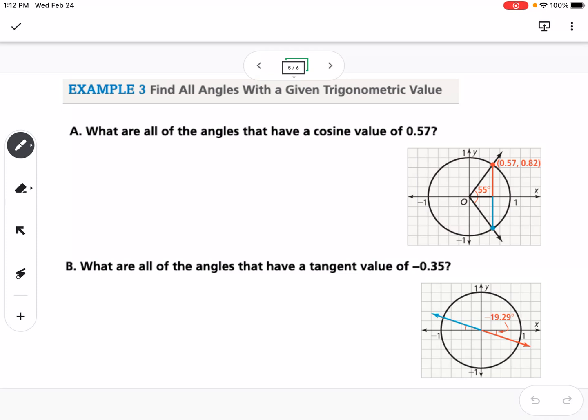So what we would start with is we go to our calculator and we would do the inverse cosine of 0.57. Now if we do that, our calculator gives us 55.25 degrees. It could also give you radians if you're in radian mode, but for now we'll focus on degrees.